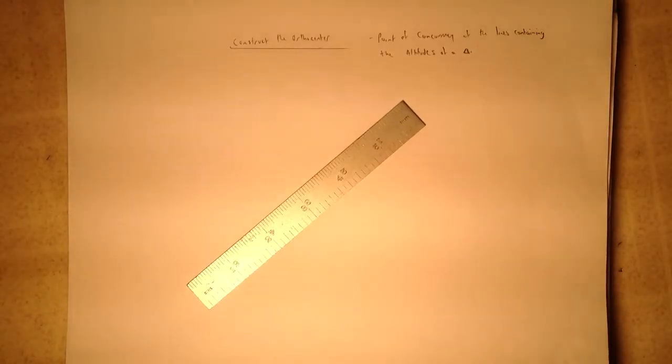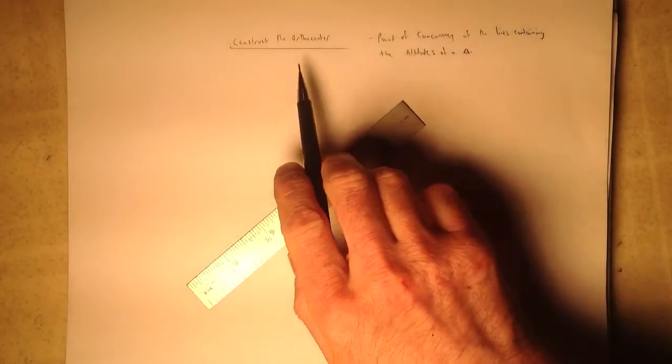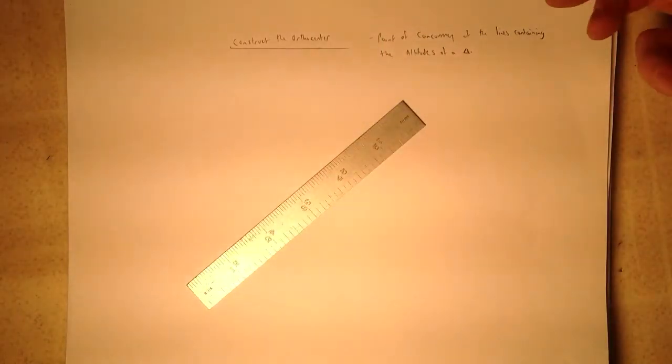This is a brief video showing the construction of the orthocenter of a triangle. The orthocenter is the point of concurrency of the lines containing the altitudes of a triangle. In order to construct the orthocenter, we first have to construct the three altitudes.